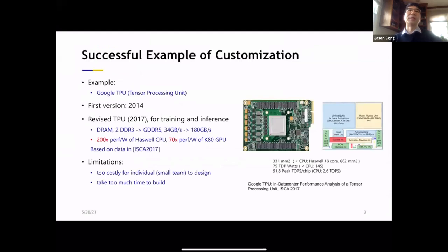So when we talk about customization, the most successful example probably is the Google TPU announced recently. The first version was done in 2014 and there's a revised version in 2017 still being updated. I know that the TPU 4 just came out recently. But if you look at the publication in ISCA 2017, this is a remarkable performance about 200x in terms of the performance power over the leading edge CPU at that time.